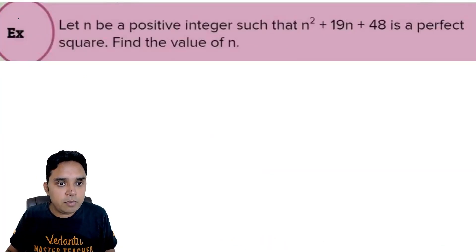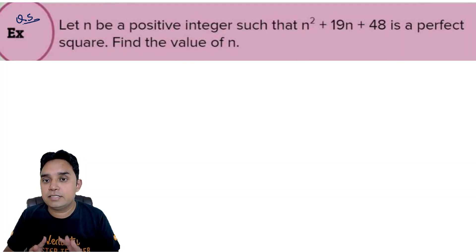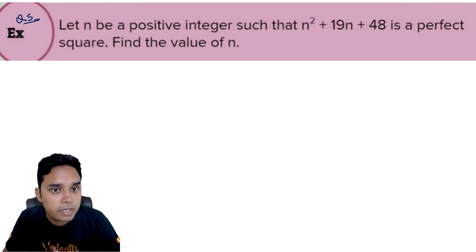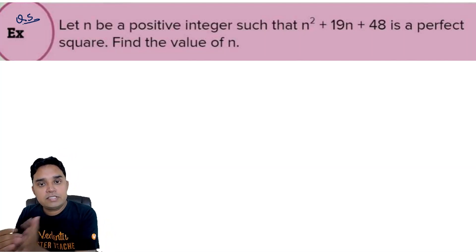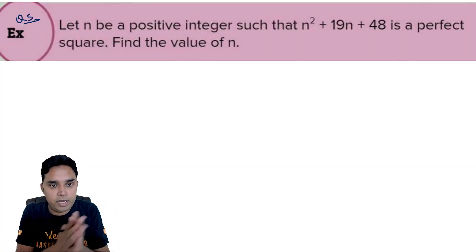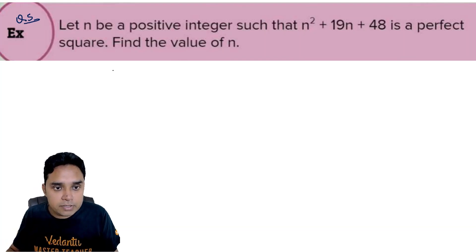Question 5: let n be a positive integer such that n² plus 19n plus 48 is a perfect square. Find the value of n. Since it is a perfect square, let n² plus 19n plus 48 equal m².